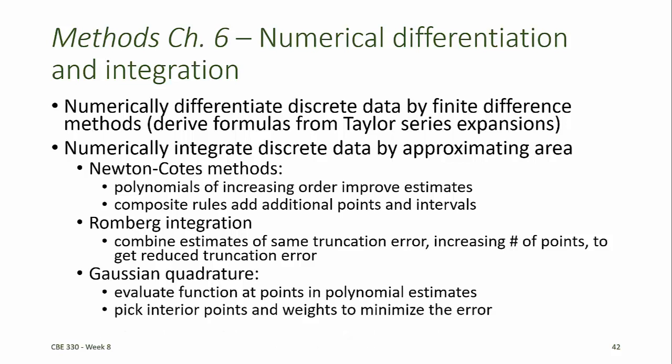The principle of Gaussian quadrature relies on picking the interior points and the weights to minimize the error. You can also think of Gaussian quadrature as fitting a higher-order polynomial to the data than the number of data points that you're fitting to.